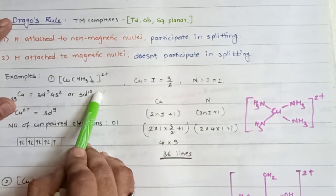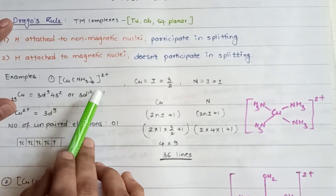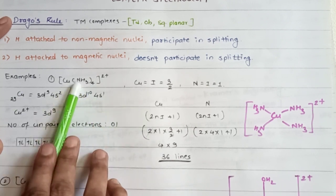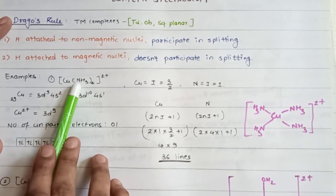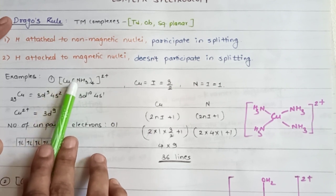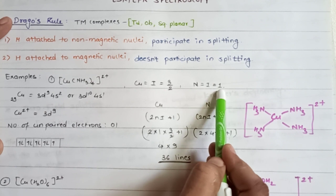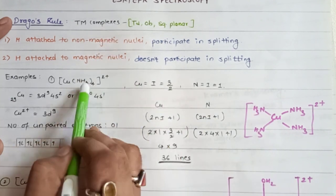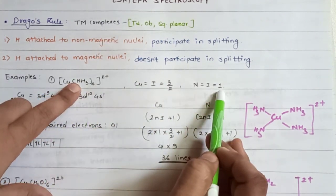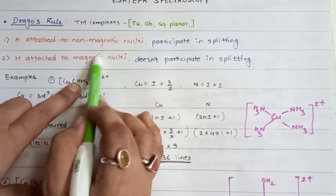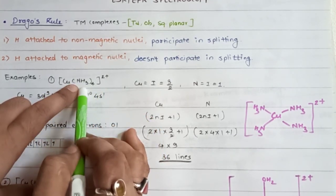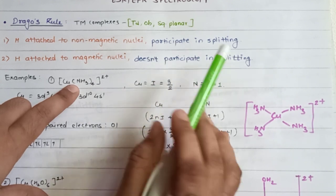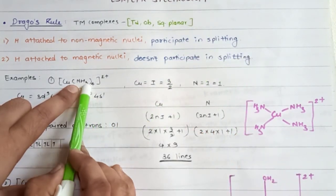For transition metal complexes, you follow two key points. Take nitrogen as an example - atomic number 7, which is not divisible by 4, and the spin number I equals 1. Because I is not zero, nitrogen is a magnetic nuclei. Therefore, hydrogen attached to nitrogen will not participate in splitting.